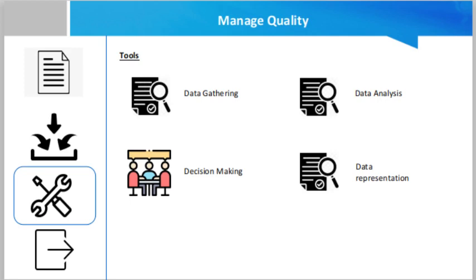Then decision making: if there are alternatives being discussed, there needs to be a decision-making process put in place to decide among those alternatives. Having criteria in place is important so that the various alternatives can be evaluated to narrow down the most viable alternatives for the project. Data representation is also another tool.